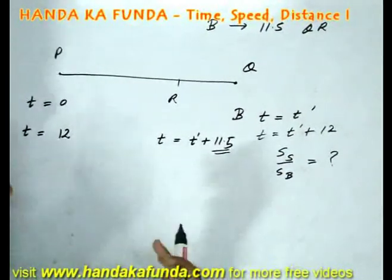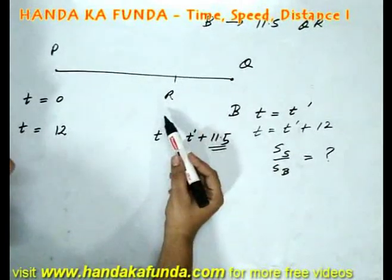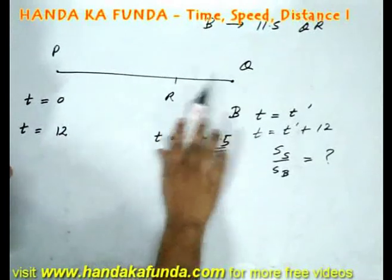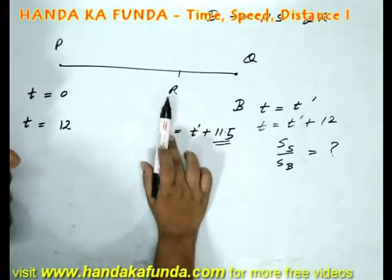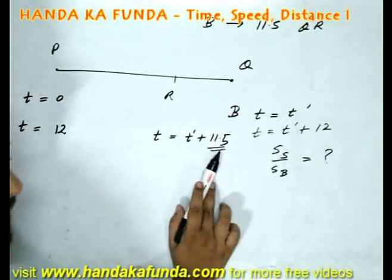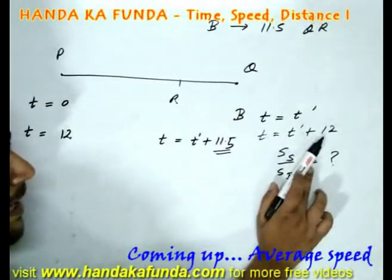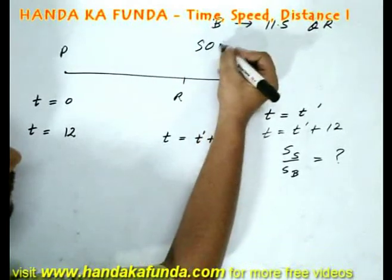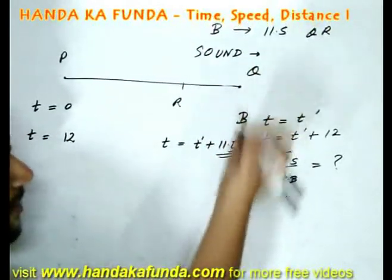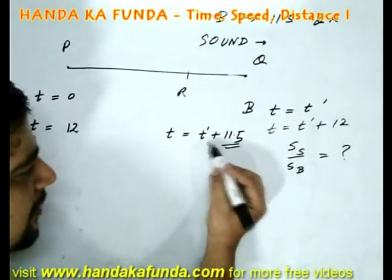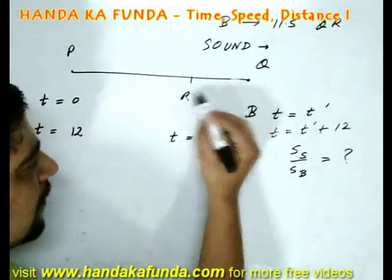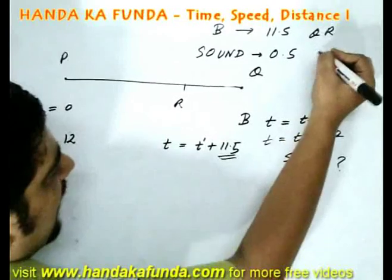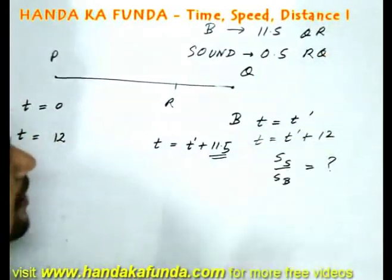Why did it not happen? Because he moved. So that means the sound of the bullet which is going from Q to Q, it passes R at T equal to T' plus 11.5 and it passes Q at T' plus 12. Which means the sound goes from R to Q in this time gap which is 0.5 minutes. And the distance covered is R-Q.